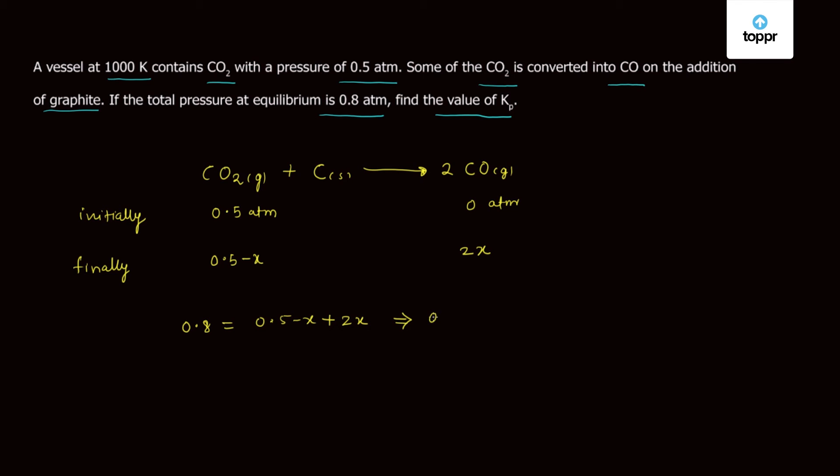On solving this we get 0.8 is equal to 0.5 plus x so this gives x is equal to 0.3. So the final pressures of CO2 is 0.5 minus 0.3 which is 0.2 and that of CO is 0.6.